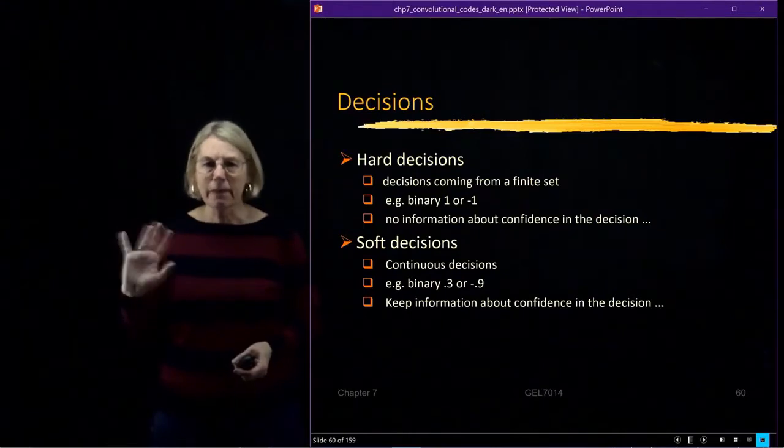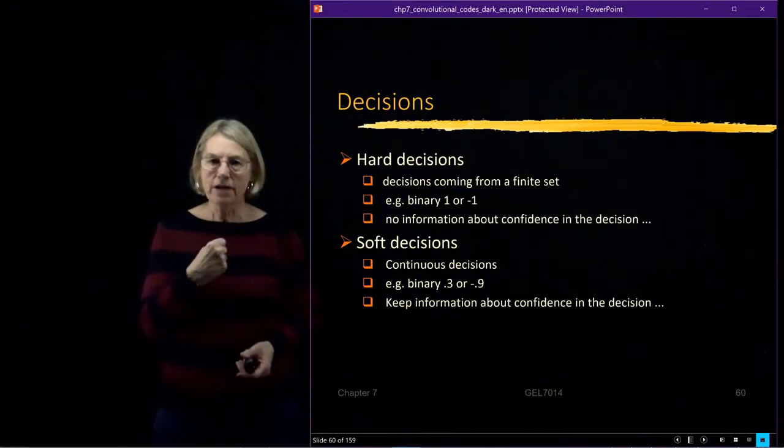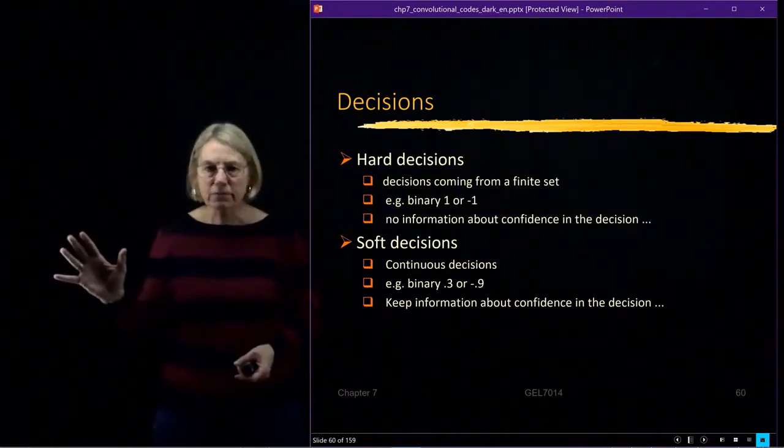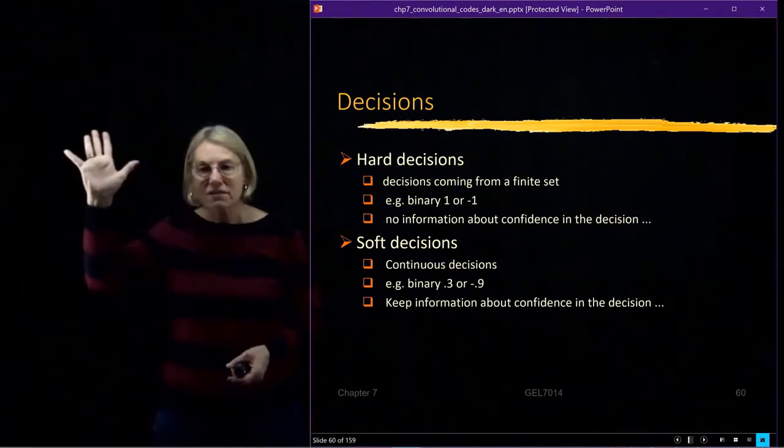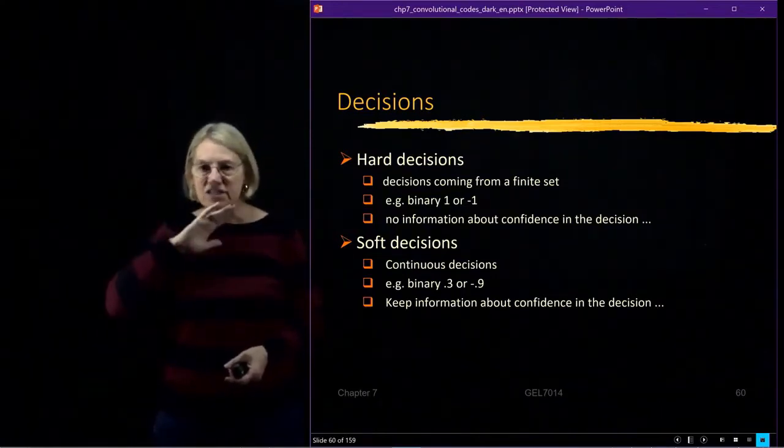There's no information about how confident I am in that decision. The demodulator says I compare it to my threshold, and it's positive, so I think it's logical one. Or if it's negative, I think it's logical zero. And it just gives a result.